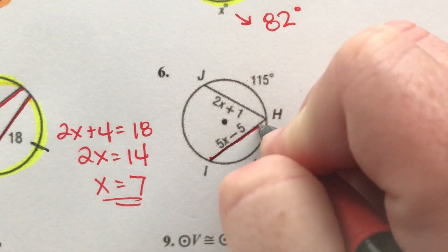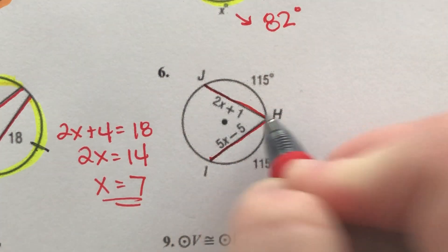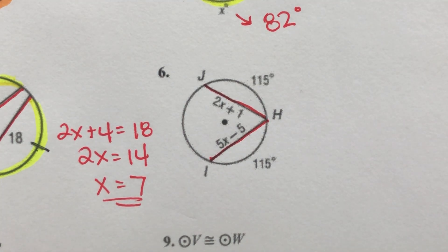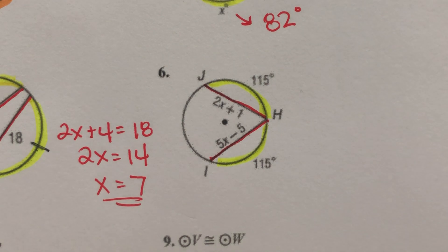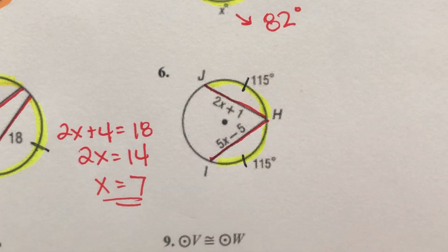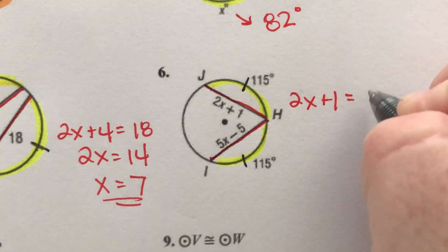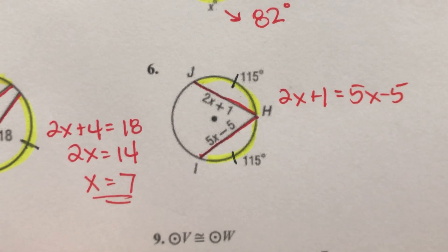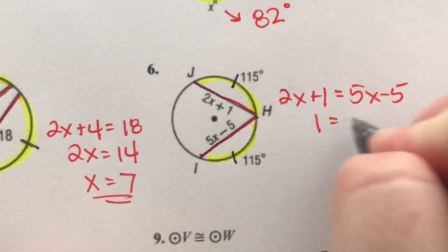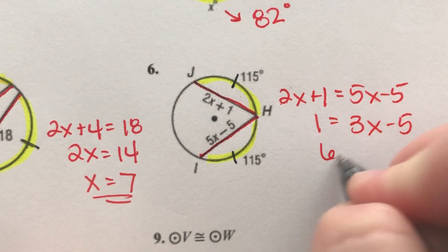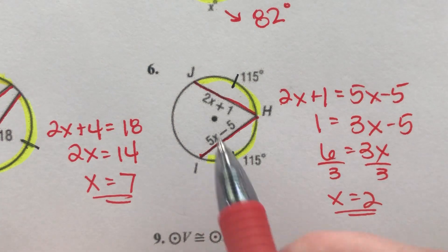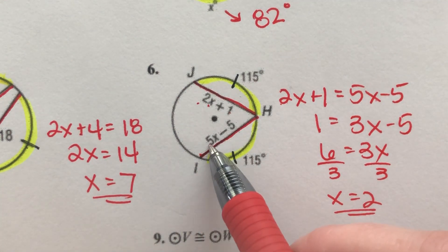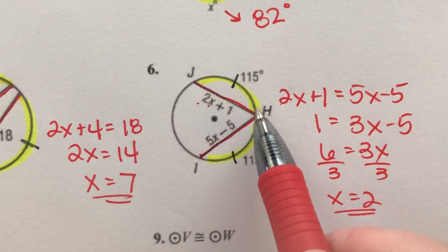Number 6: two chords. The arcs are not marked congruent, but it tells us the measure of each arc is 115 degrees, so they are congruent. Since the arcs are congruent, the chords are congruent. So we set 3X minus 5 equal to the other chord expression. Add 5, giving 6 equals 3X. X equals 2. Plugging back in: 2 times 2 is 4, plus 1 is 5; and 3 times 2 is 6, minus 5 is 5. Both chord lengths are 5.